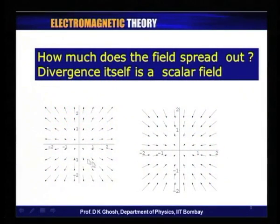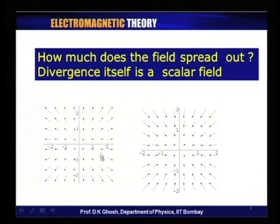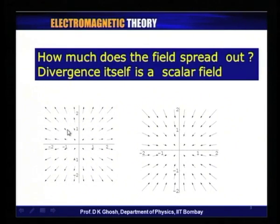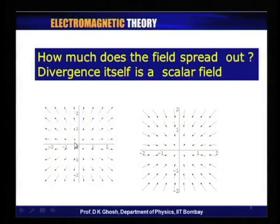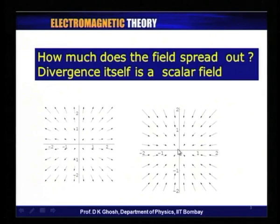Looking at these pictures, you find that in one case the fields are spreading out from the origin — this is the type of vector field you would expect for the electrostatic field due to a positive charge, essentially spreading out. On the other hand, in the second picture the fields are converging to the center. So these are examples of positive and negative divergence respectively.